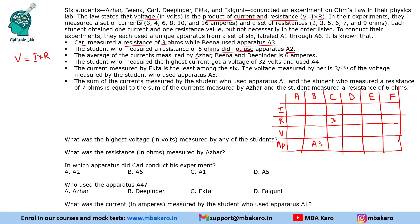The average of the currents measured by Azhar, Bina and Deepinder is 6 amperes, so their total is 18. There is only one odd current available, so it cannot be used. Including 16 takes the total beyond 18, and including 10 gives 10+4+6=20, which is too high. So it is clear these three used currents of 4, 6 and 8 in some order.